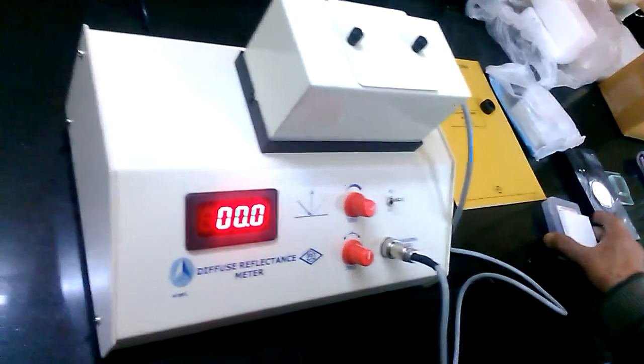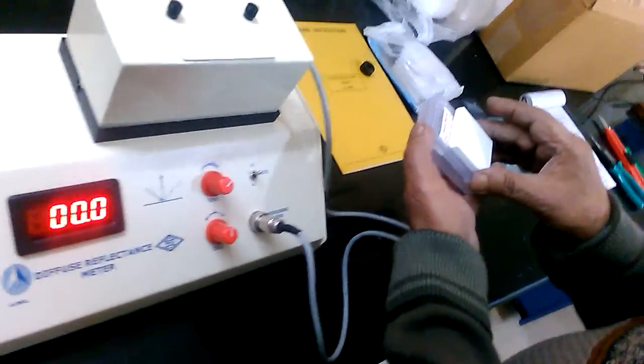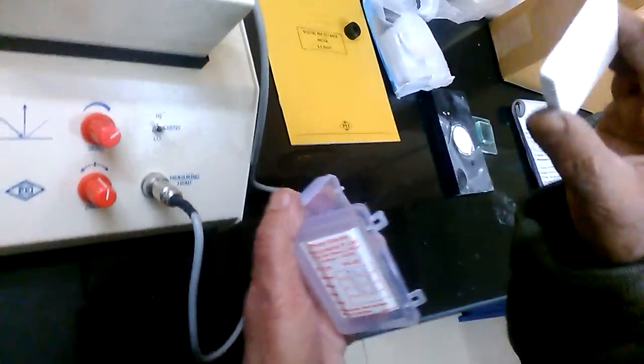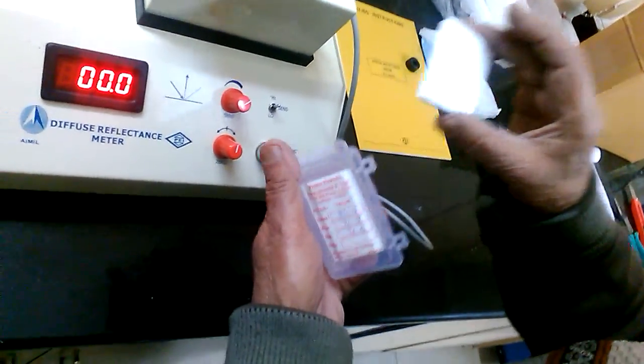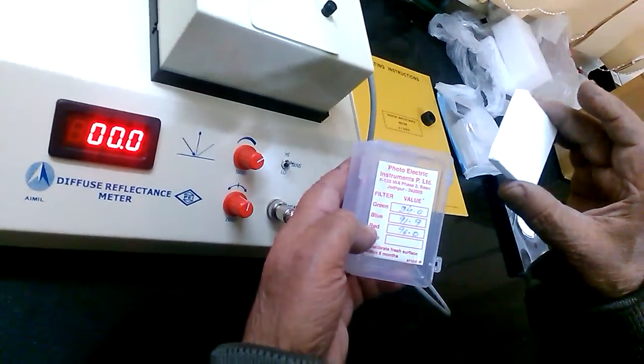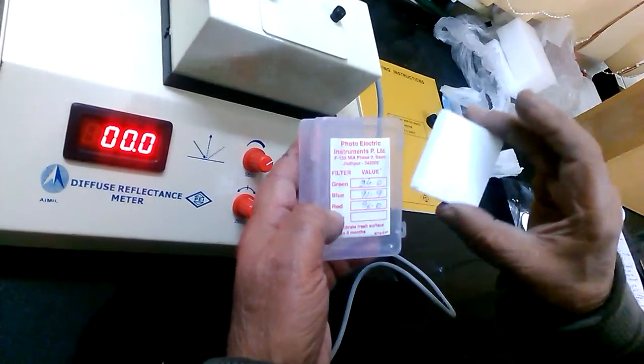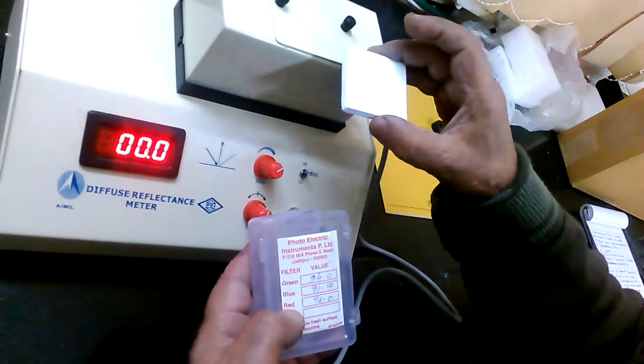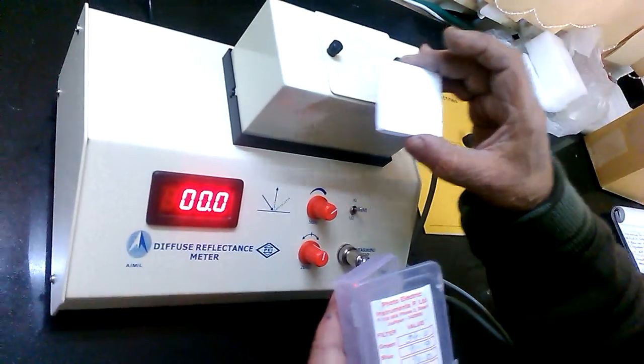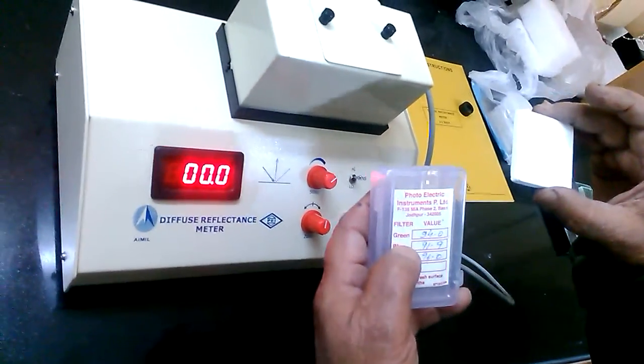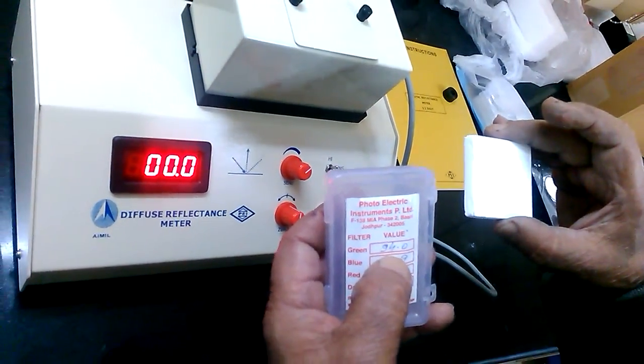Then remove from packing box the MG block. This is white substandard. This is calibrated standard against green-blue filters. In this instrument, the green filter is fitted. So, note down the reading of green filter is 94.